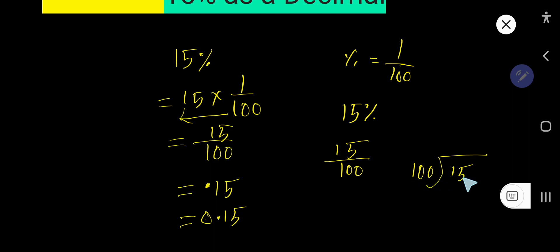15 is less than 100, so 0 times 100, that is 0. If you subtract, then you are getting 15.